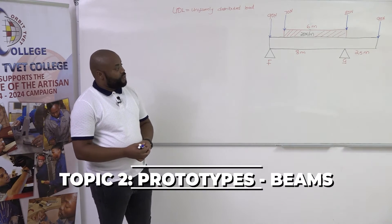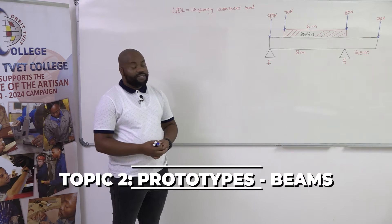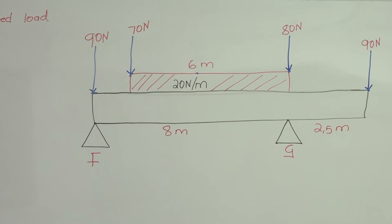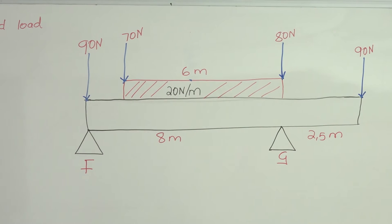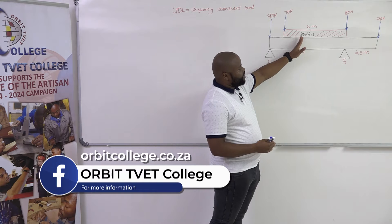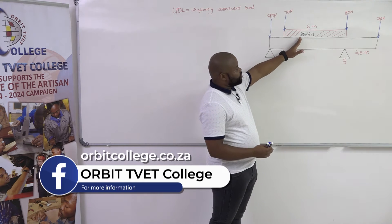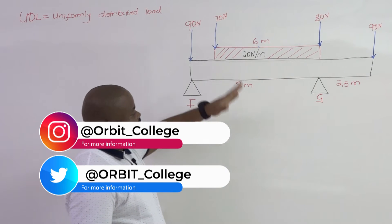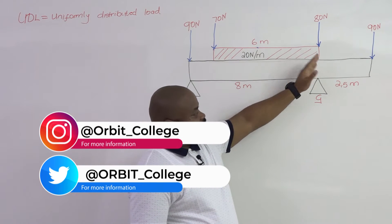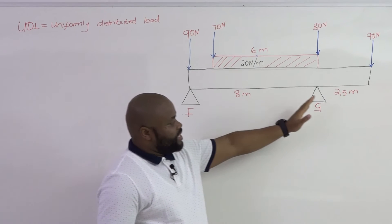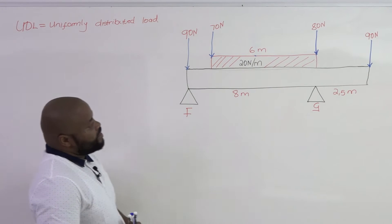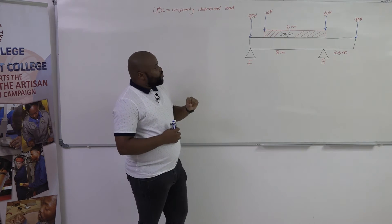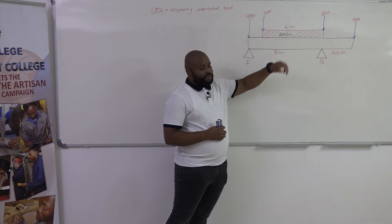On today's beam that I've drawn on the board, it's a beam that includes the uniformly distributed load. A uniformly distributed load is a load that gets distributed for every meter. You've got 20 newtons being applied on the beam for every meter. Our UDL runs for six meters from the total 10.5 meters of our beam. The first thing we do on this kind of beam is we're going to start by making our UDL a point load.